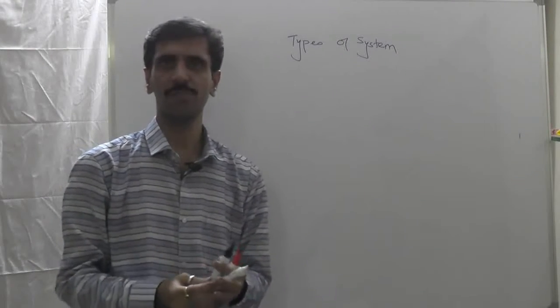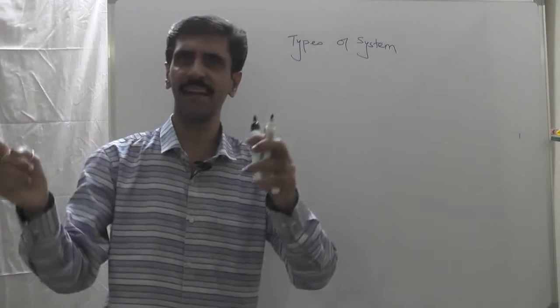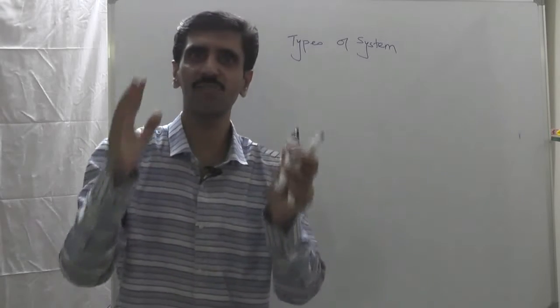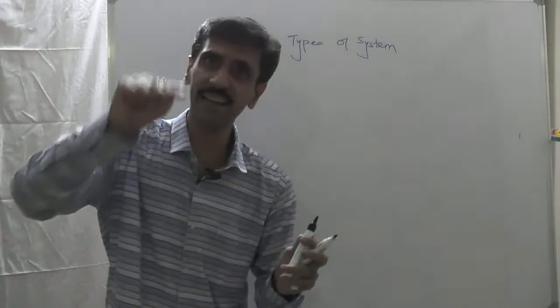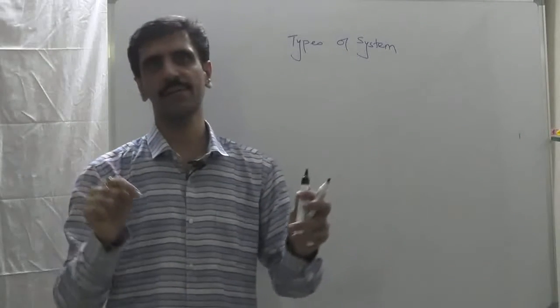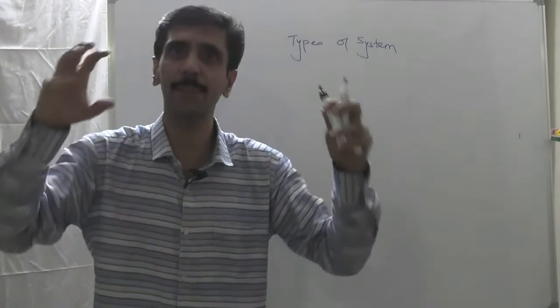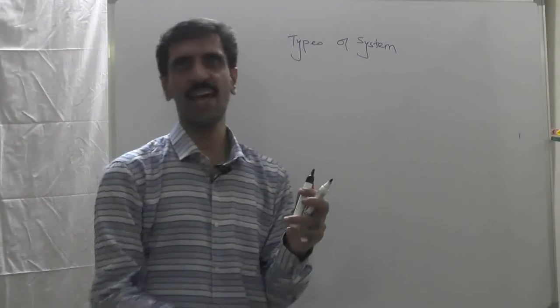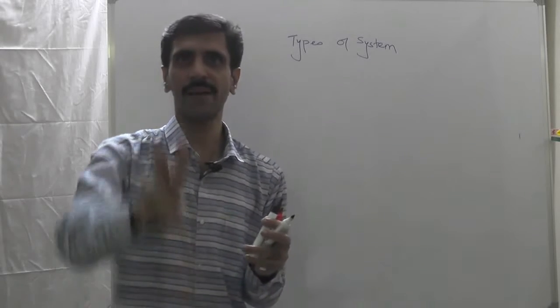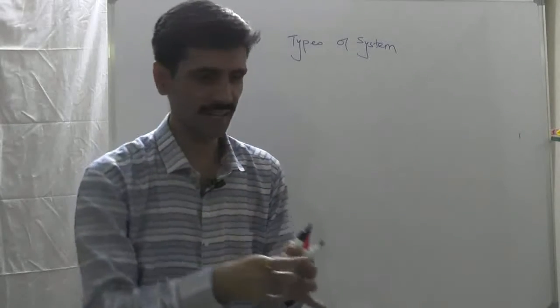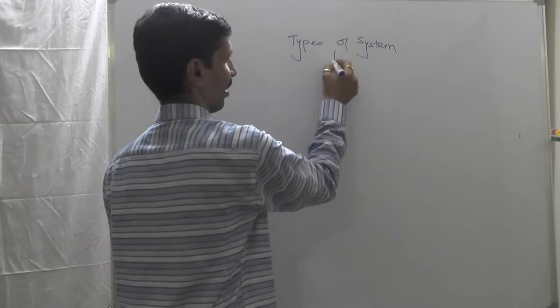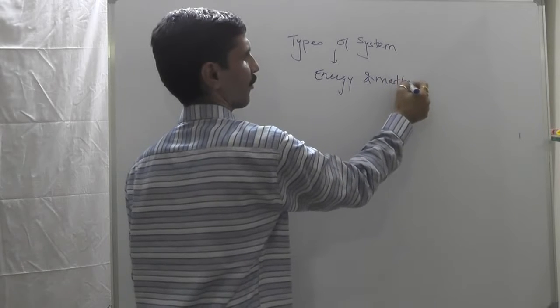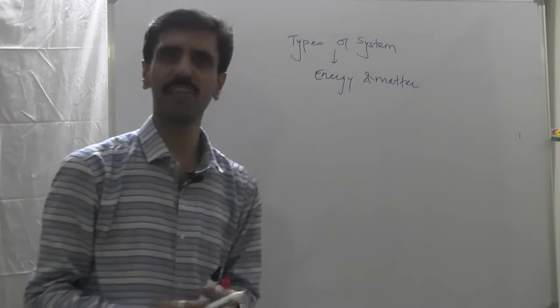When we talk about types of system, types means it's related to classification. There has to be a certain parameter or classification criteria. Which is that parameter we are going to use? My dear friends, there are two of them: the first one is energy and the second one is matter.